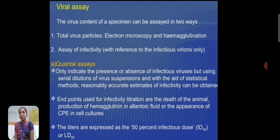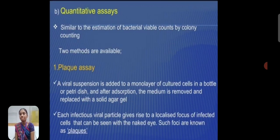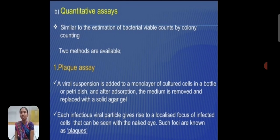The endpoints of infective titration include death of the animal, production of hemagglutinin in allantoic fluid, and the appearance of CPE in culture.